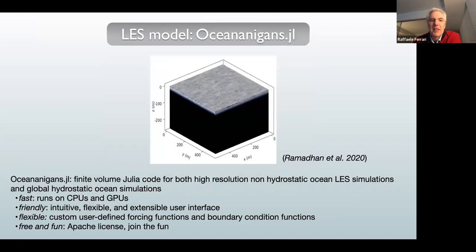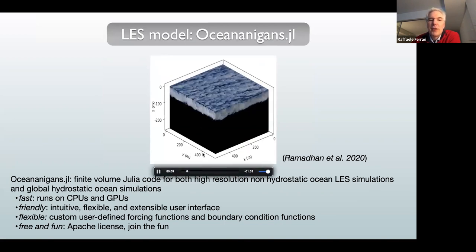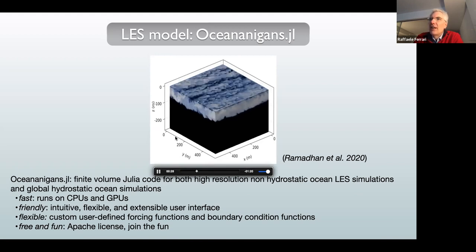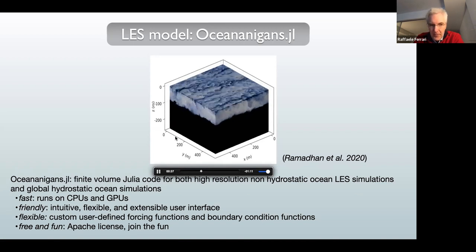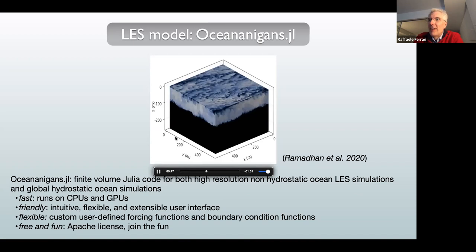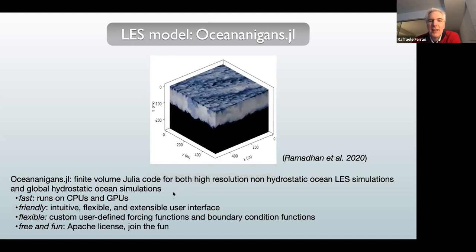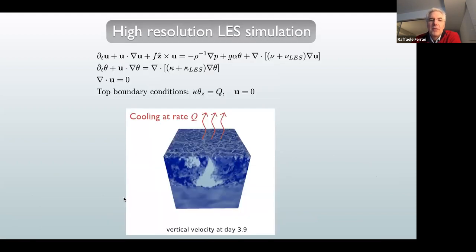We have created the model OceanAnigans that can be run at very high resolution — 500 by 500 meter boxes. It's written in Julia, a new coding language that makes it very easy to run the same model on GPUs or CPUs. GPUs are very efficient and fast processing tools, which is what we need. One problem of traditional languages is that when you transition to a different architecture, you have to rewrite large parts of the code. With Julia, we can avoid that problem — it's the same code that runs without any change, except one line specifying what architecture to use, and the compiler deals with the architecture specifics.